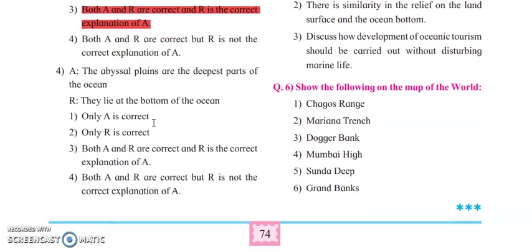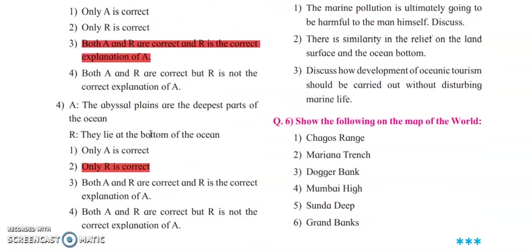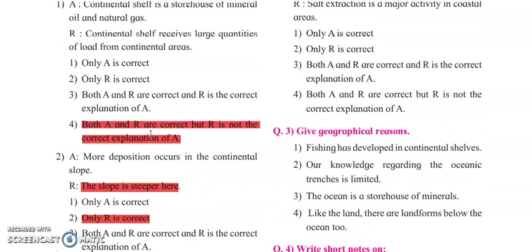Next: the abyssal plains are the deepest part of the oceanic floor. Now, abyssal plains are the flat part, not the deepest part — so the assertion is false. Reasoning: they lie at the bottom of the ocean floor — this is correct. So only R is the correct answer here.